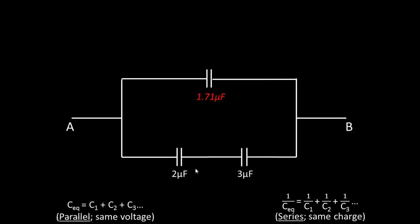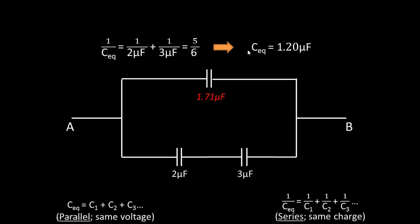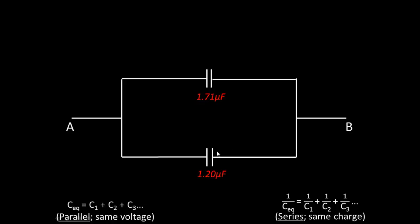For the bottom branch, the 2 microfarad capacitor is in series with the 3 microfarad capacitor. Adding inversely: 1 over 2 plus 1 over 3 equals 5 over 6. Taking the inverse gives an equivalent capacitance of 1.2 microfarads. We're now left with the 1.71 and 1.2 microfarad capacitors in parallel, and 1.71 plus 1.2 equals 2.91 microfarads, which is the equivalent capacitance of the whole circuit.